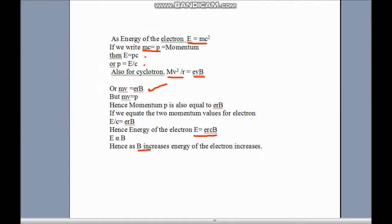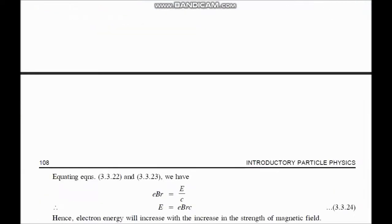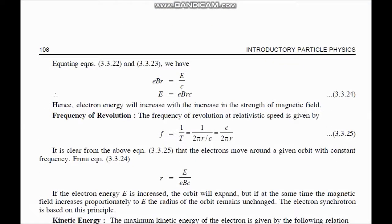We go back to the main topic. Here we take this value, E equals e b r c. Just as electron's energy increases with the increase of strength of the magnetic field, this is how it gets accelerated.